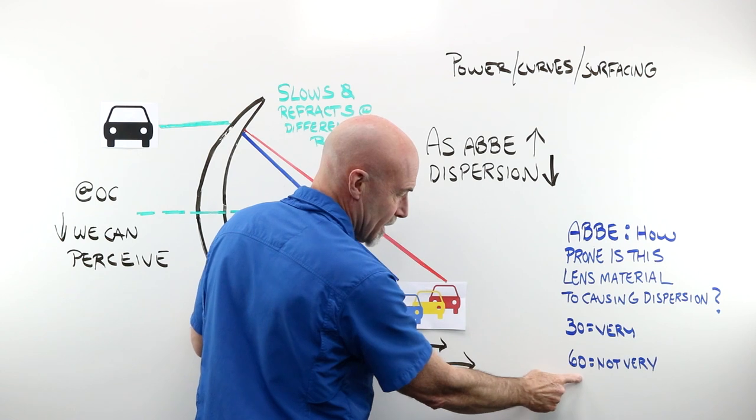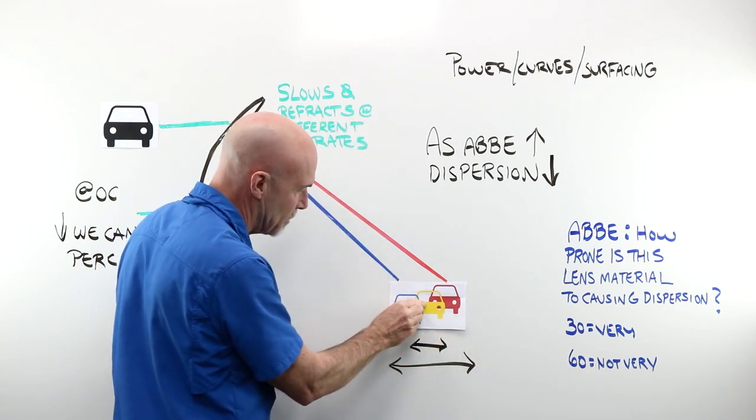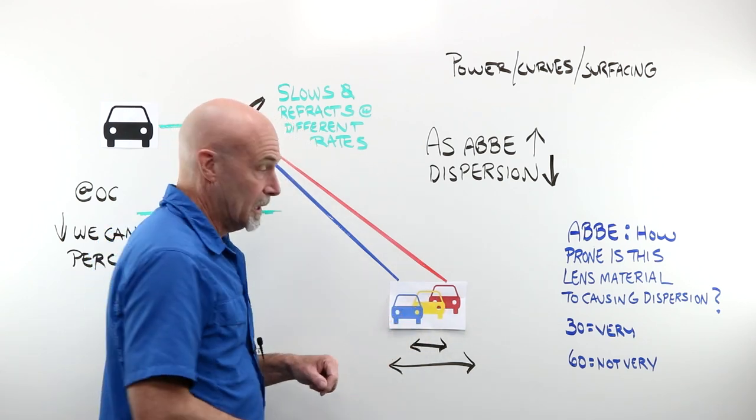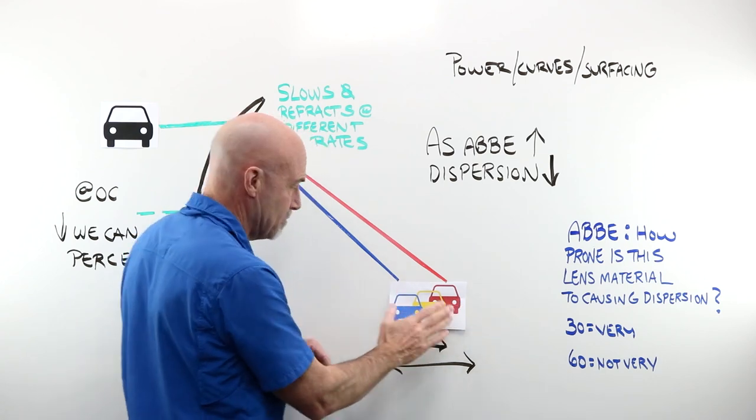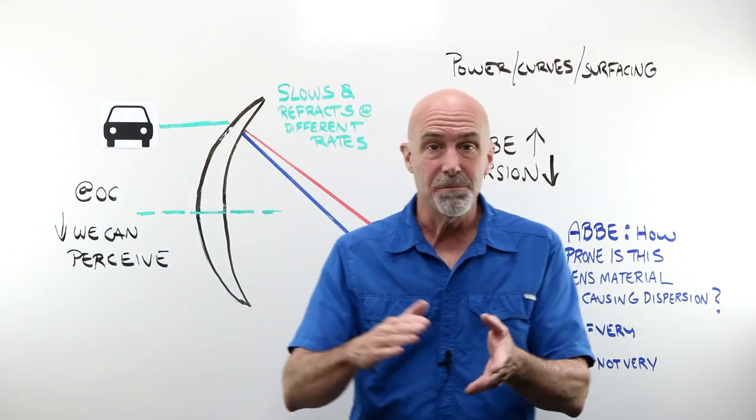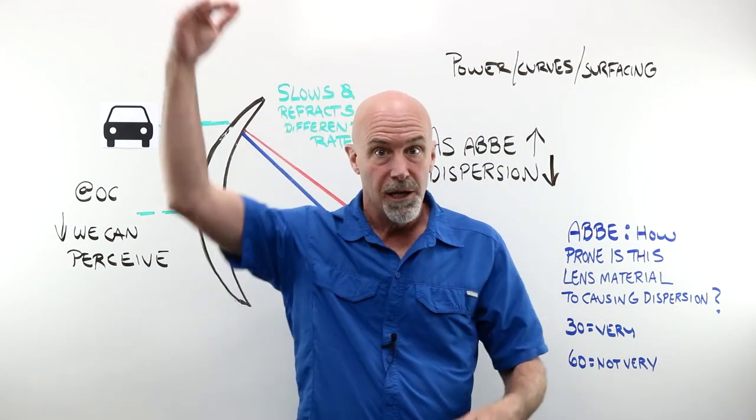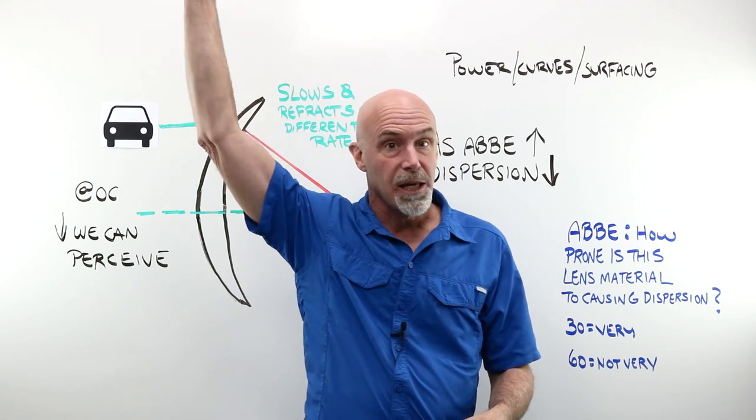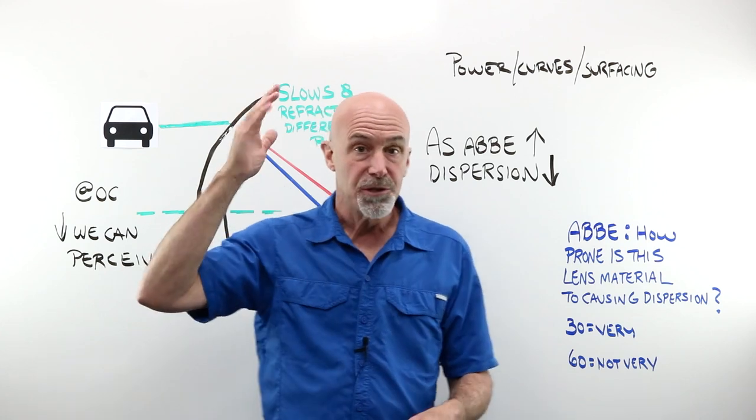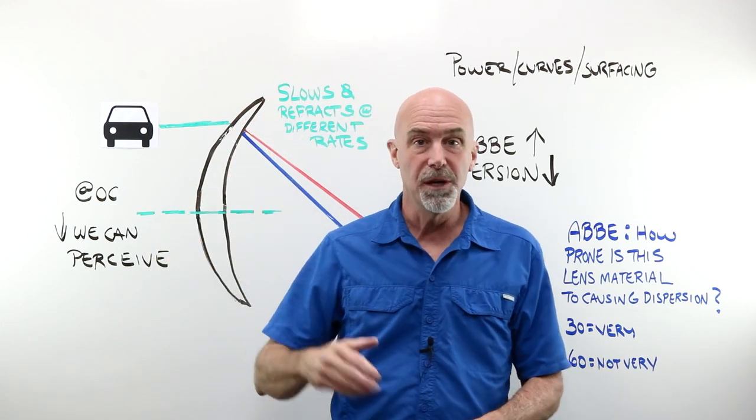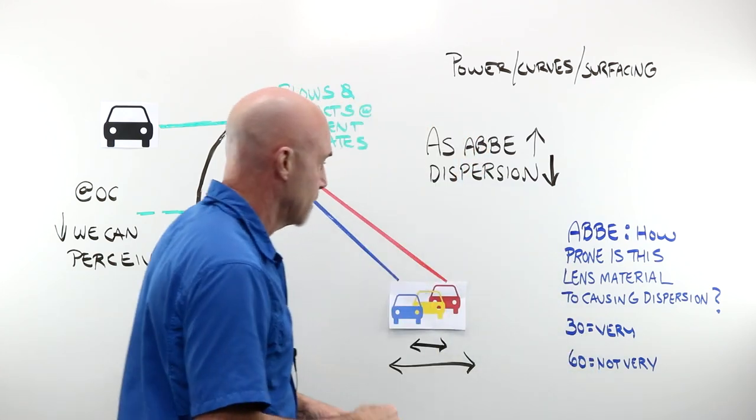As Abbe increases, dispersion, the spread, decreases. So if I have a beautiful glass lens with an Abbe of 60, these are together, these are overlapping. You could barely make out the red, the yellow, and the blue. And with 30, my polycarbonate, very spread out. If I am wearing a cheap, nasty polycarbonate lens that wasn't really made very well, and I'm looking at this bright light up here in the corner, I can actually see the breakdown of white light. I will see that rainbow effect, the full ROYGBIV of that visible spectrum. Dispersion.